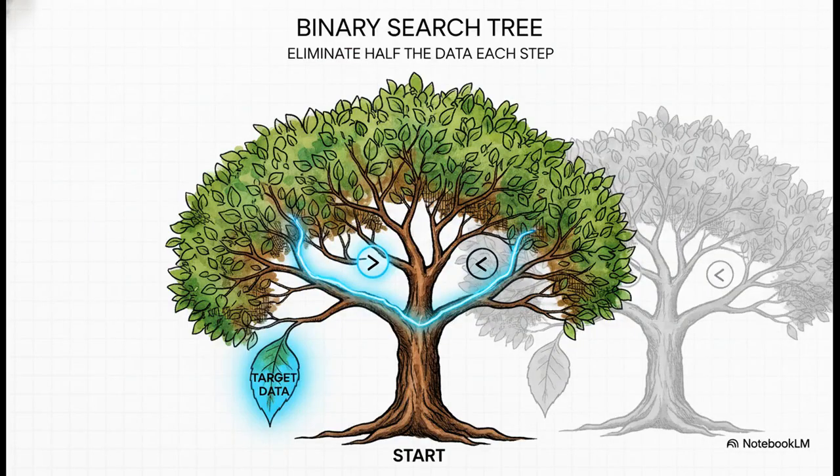Our second solution is for when you need that speed, but you also need your data to stay organized and sorted. This is the binary search tree. It works kind of like a game of 20 questions. With every single question, you get to eliminate half of the remaining possibilities. A search tree does this with data. It starts at the top and asks, is the item I'm looking for greater or less than this one? With each step, it cuts the search area in half, just homing in on the target with incredible speed.